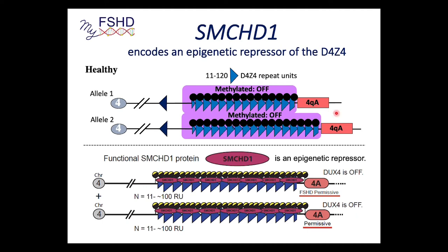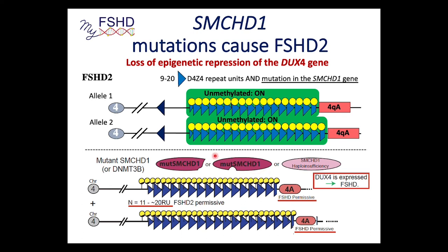SMCHD1 helps set up the repression arrangement at the D4Z4 locus — it's what keeps healthy chromosome 4s epigenetically off. In FSHD2, there's a mutation in the SMCHD1 gene; there can be different types of mutations that give you only part of the protein, a non-functional protein, or deletion of the whole gene. These give slightly different nuances of epigenetic dysregulation, but the end result is that DUX4 is going to be expressed — as long as you have the 4qA permissive subtelomere.